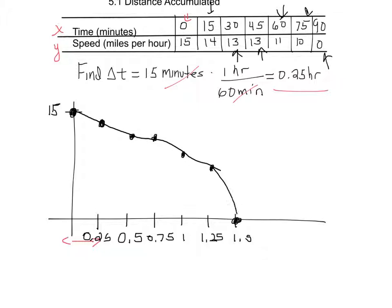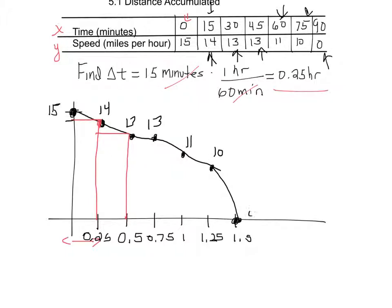This is what the function looks like, and what I'm trying to find is the area under it. Let's find it with a lower estimate first. For a lower estimate, I start at a point, go up to it, draw a rectangle across to the next point, and repeat. I'll first look at just the first half hour — so I'm finding the area of these two rectangles. The heights are 14, 13, 13, then 11, 10, and zero.